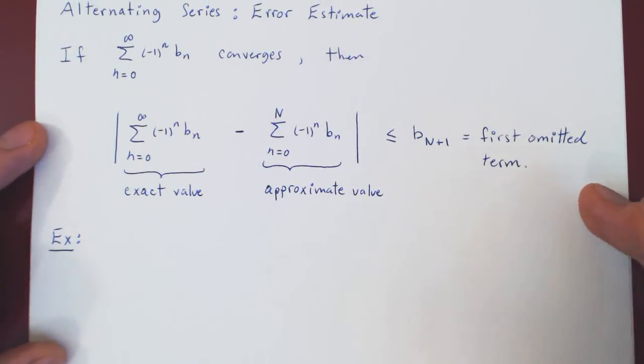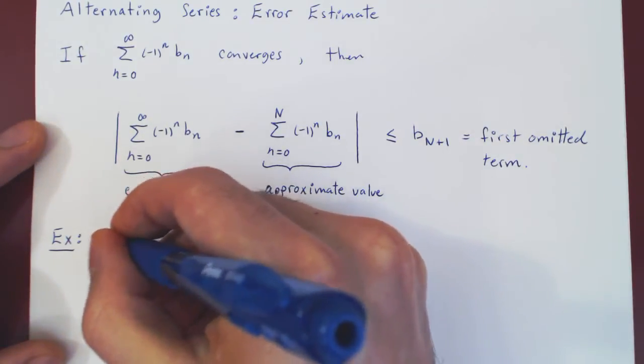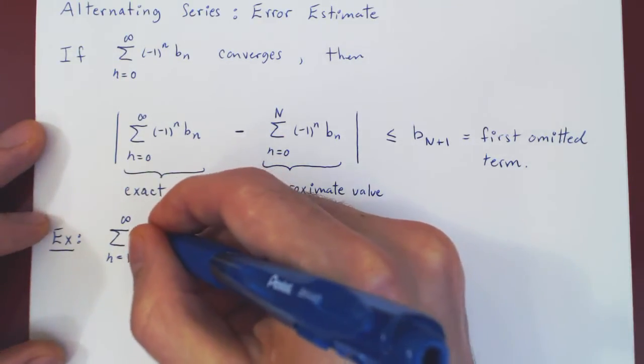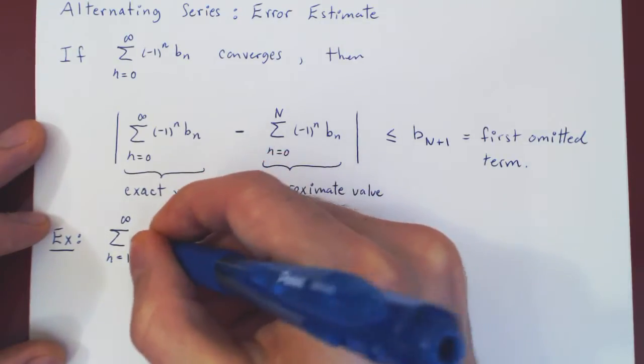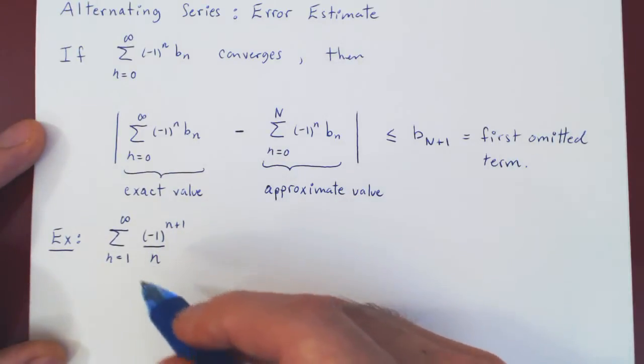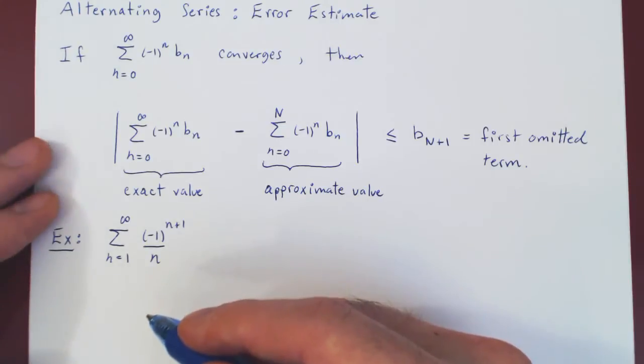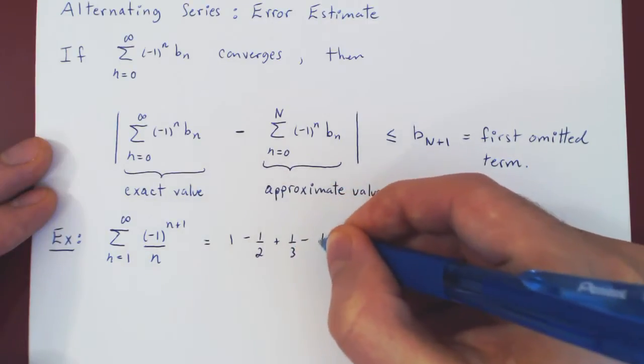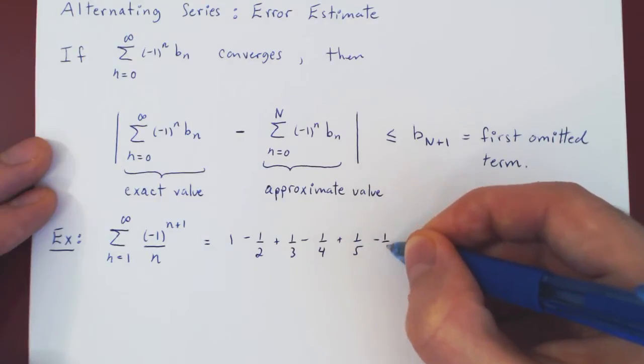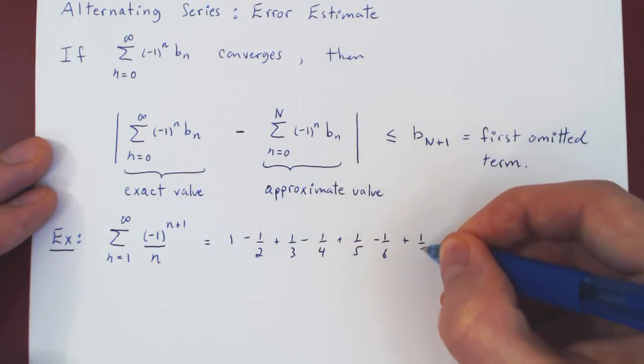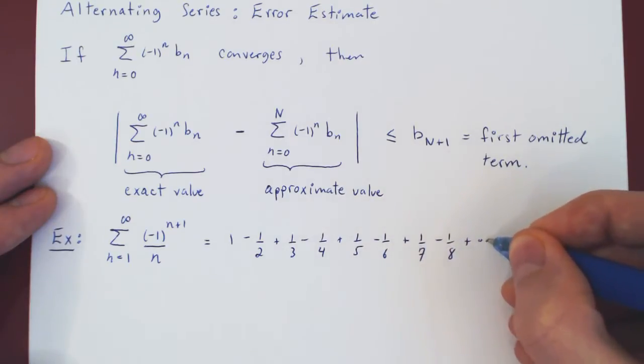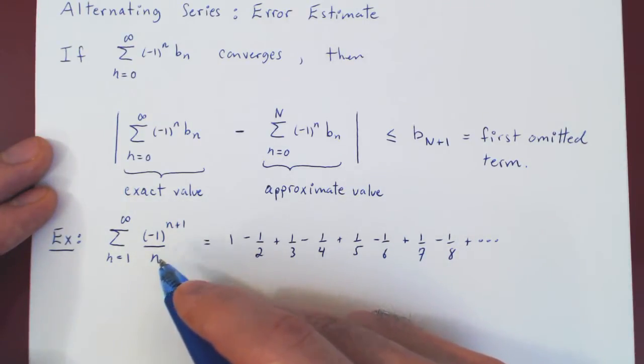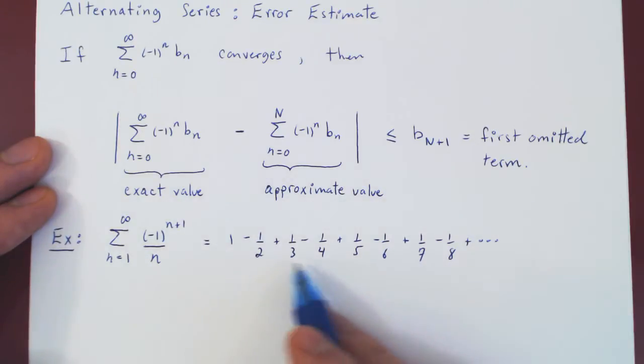Let's look at an alternating series that we have considered a few times so far. So the sum of negative 1 to the n plus 1 over n, as n goes from 1 to infinity. So let's write out the first few terms of our series. This is 1 minus a half, plus a third, minus a quarter, plus a fifth, minus a sixth, plus 1 over 7, minus 1 over 8, and so forth. So this is clearly an alternating series, and the bn is 1 over n, which clearly is positive, clearly decreasing, and clearly shrinks to 0 as n goes to infinity. So we have convergence.